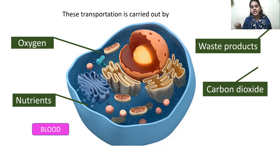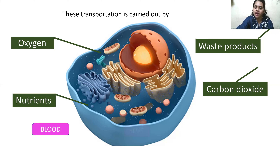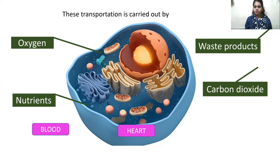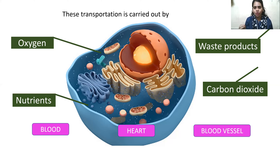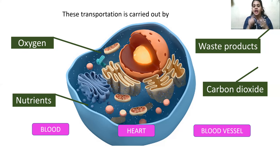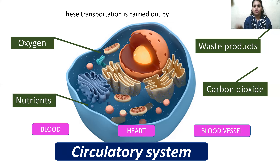We call blood the main circulating fluid because it transports various substances in our body. But blood needs an organ so that it can be pumped throughout the entire body, and that pumping organ is called the heart. It also requires certain tubes so that it can reach every minute space of our body, and those tubes are called blood vessels. So our body requires three important things: blood, heart, and blood vessels — and together they make a system called the circulatory system. In today's video we are going to talk only about blood.